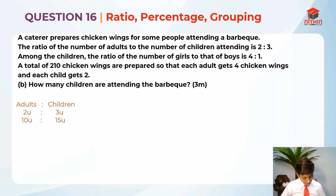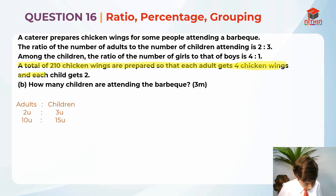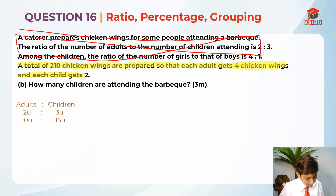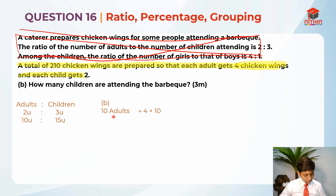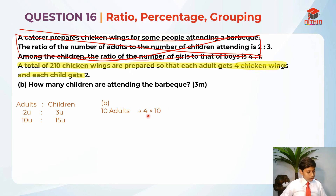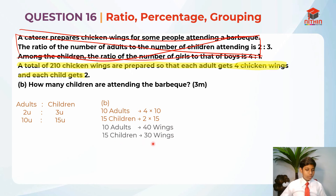I'm going to use this very important line — the total of 210 chicken wings. I'm going to take 10 units as 10 adults and 15 units as 15 children. Finding the number of chicken wings: 10 adults get 4 chicken wings each, so 4 times 10. And 15 children get 2 chicken wings each, so 2 times 15. So 10 adults get 40 wings and 15 children get 30 wings, giving 70 wings total. This is basically one group.